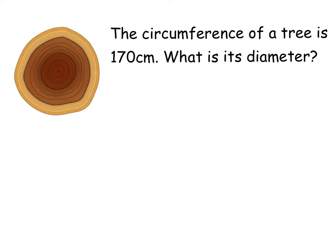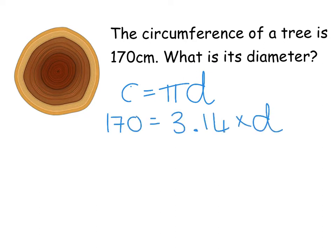We know already that the formula for circumference is C = πD. We know that our circumference is 170 and we know that we use 3.14 for π. We just don't know what that diameter is. So we've got 3.14 times something gives us 170.